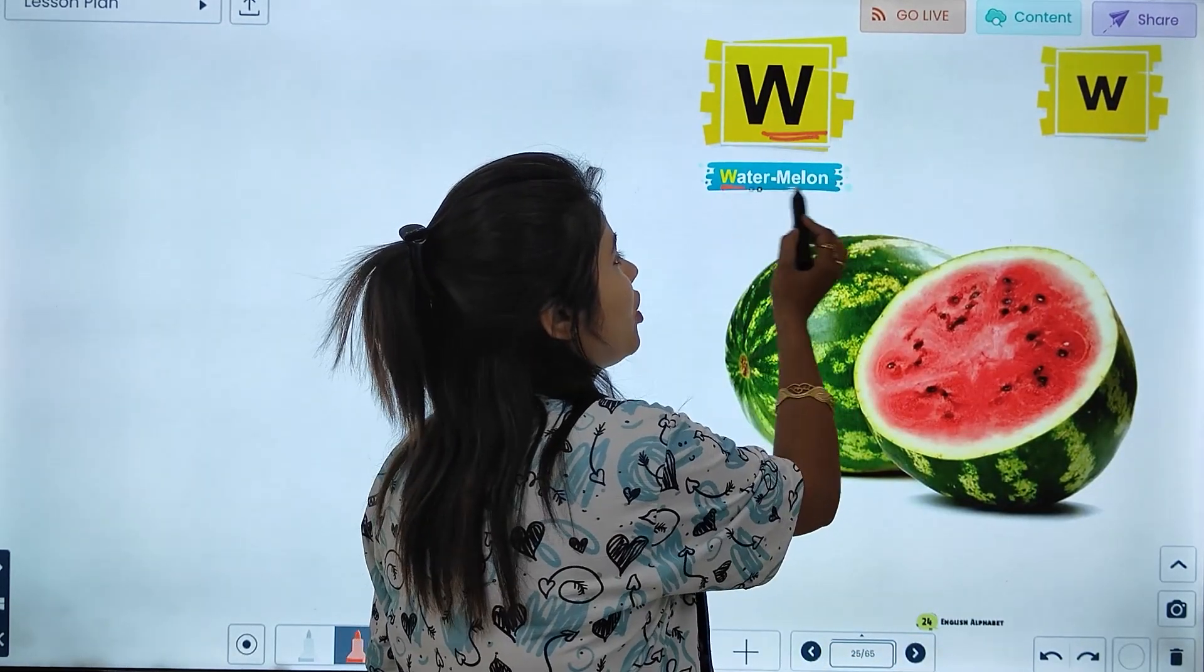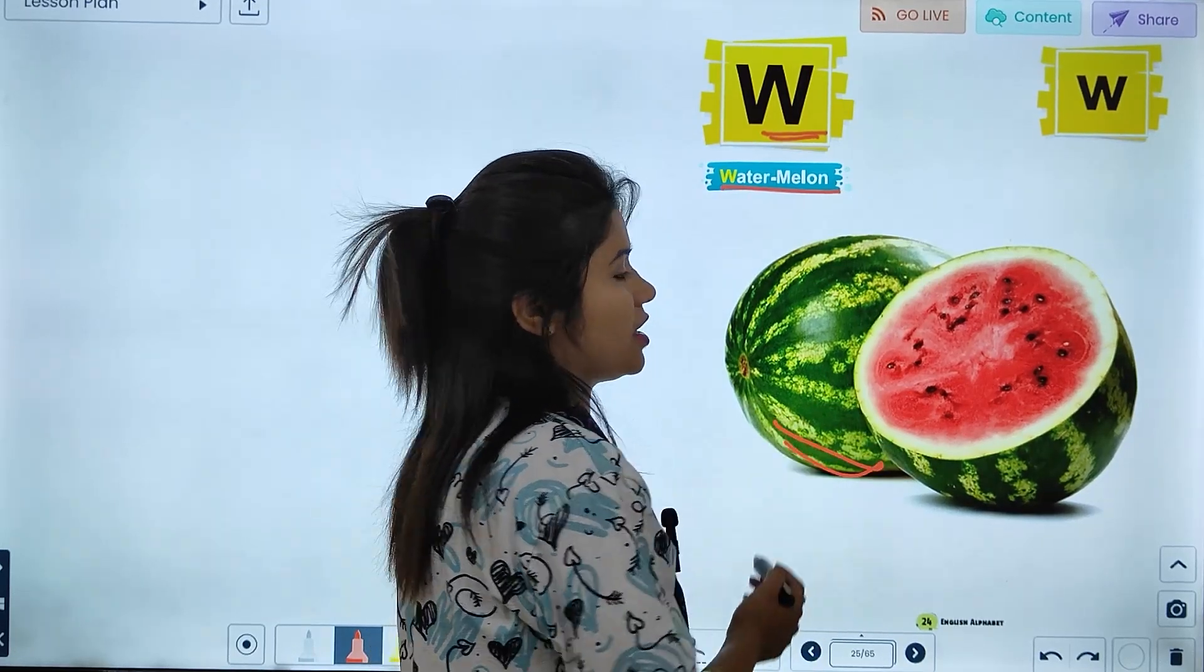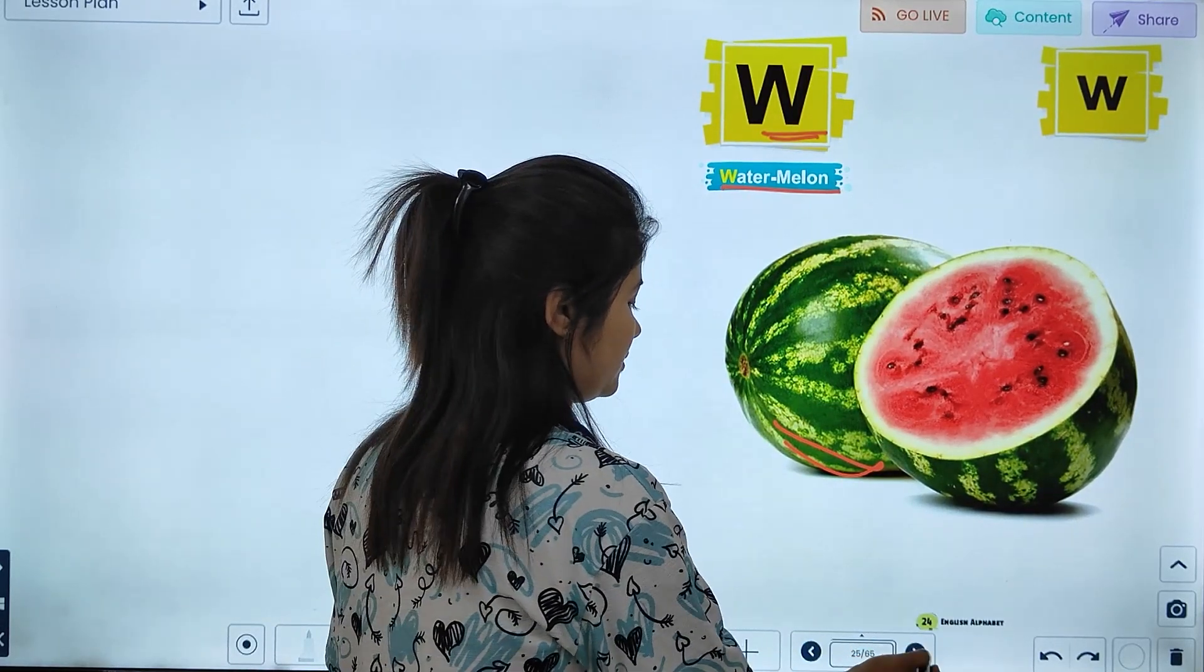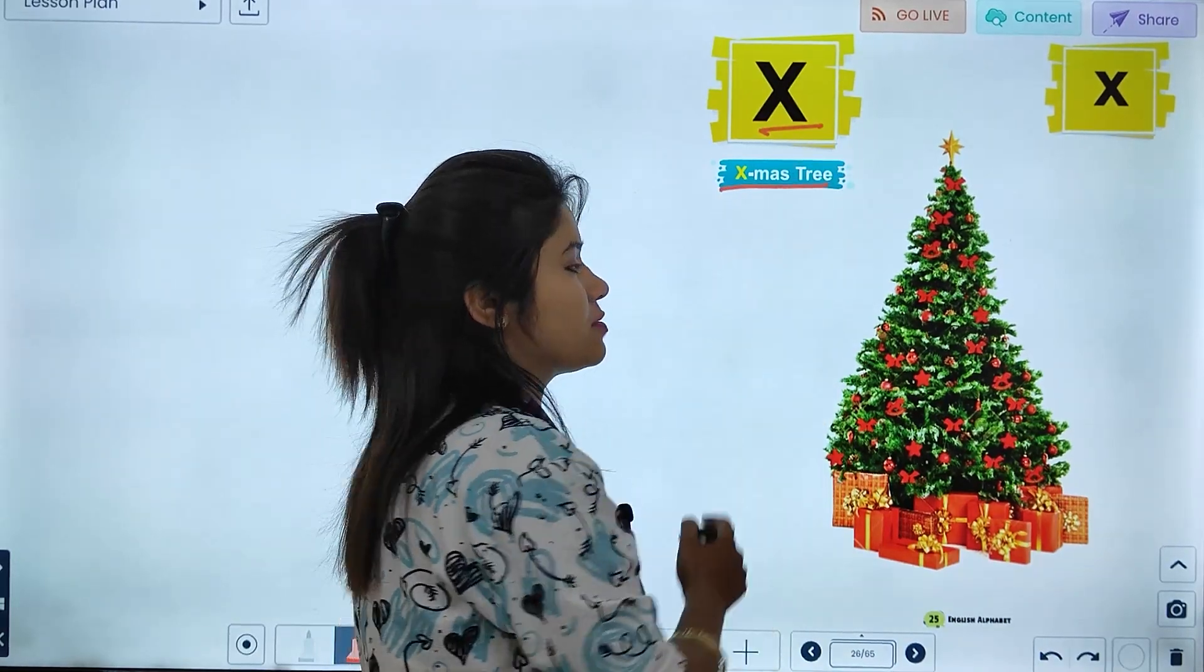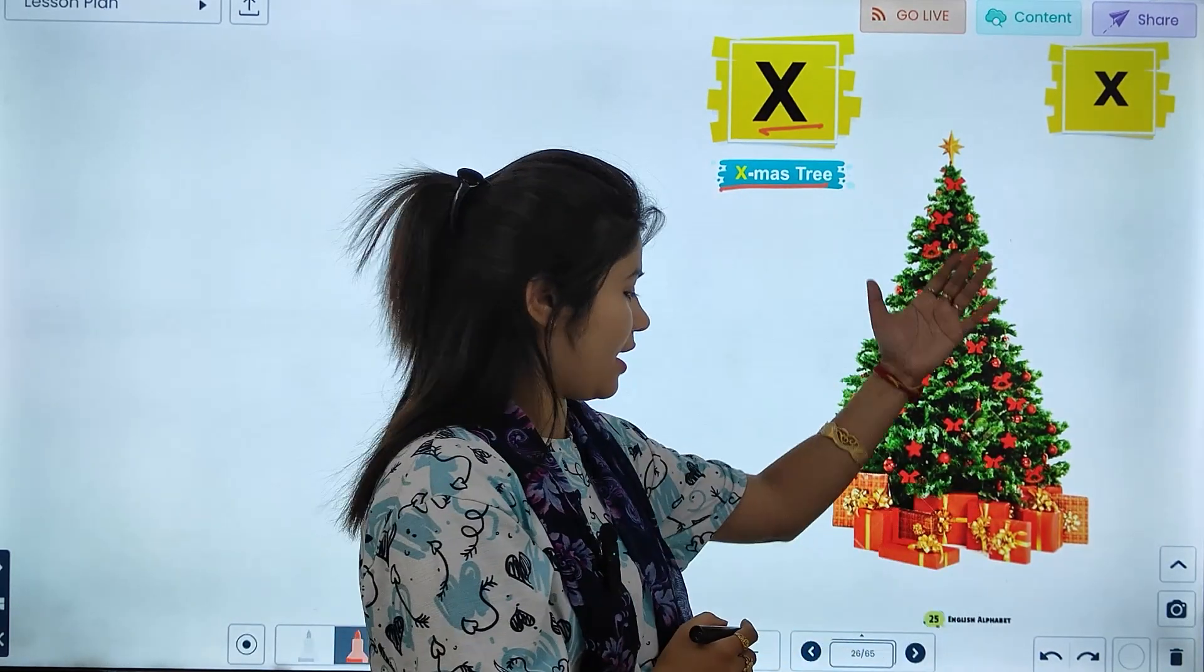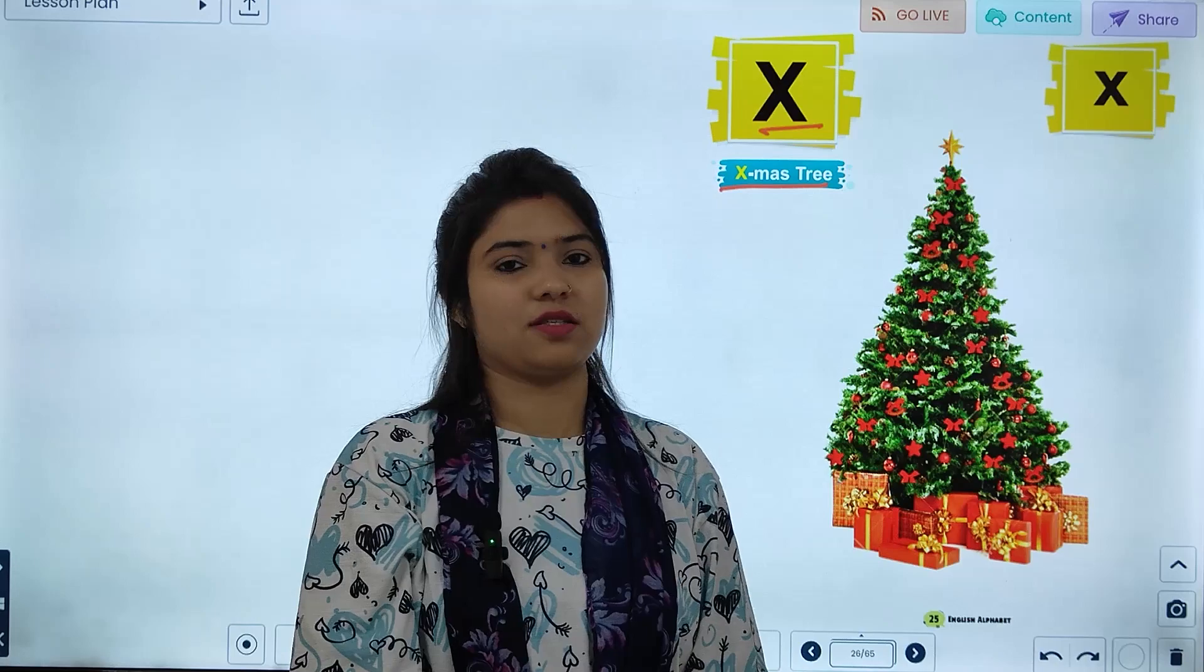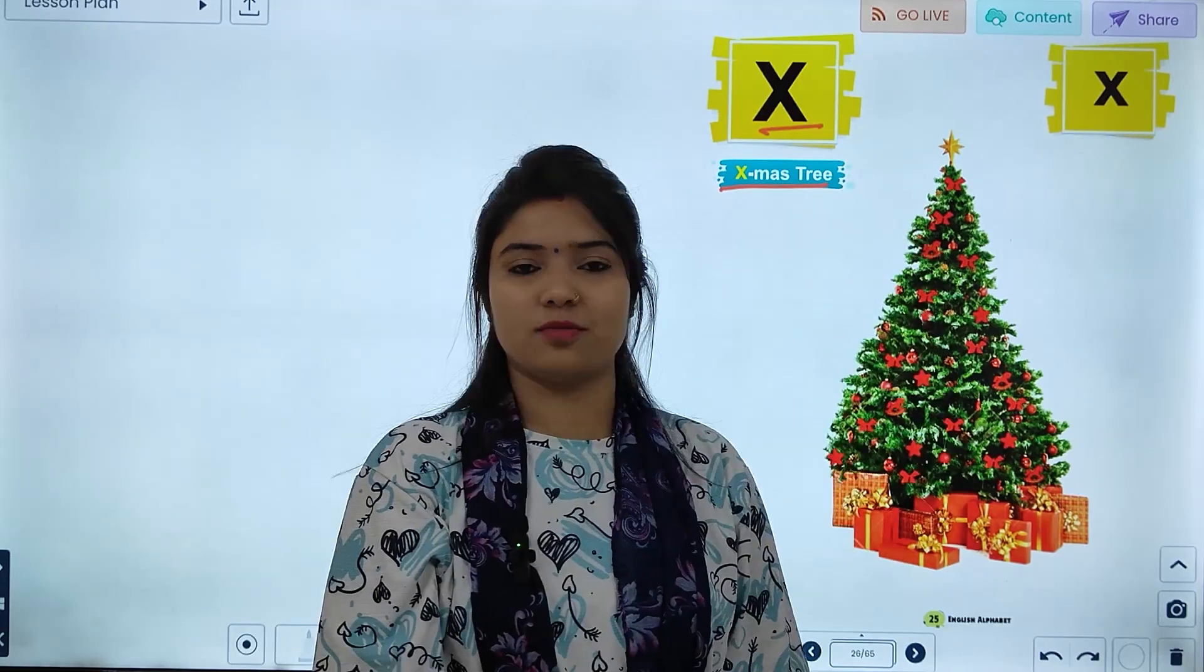W, W for Watermelon. So, what picture is this? Watermelon. X, X for X-mas tree. So, what is X-mas tree? Here you have the X-mas tree. X for X-mas tree.